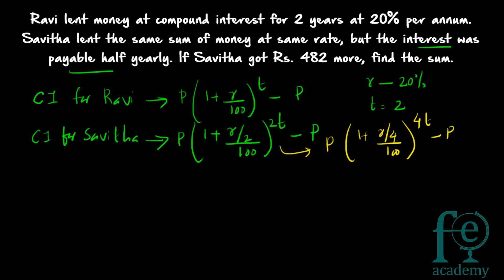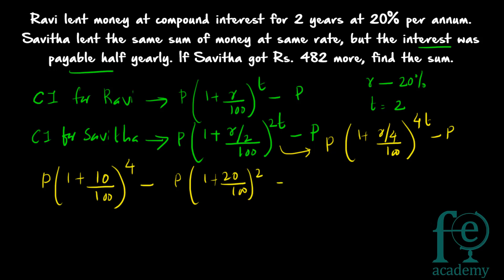Now you have to find the difference between the two compound interests, and that difference is equal to 482. So write down the formula. It will be: P × (1 + (R/2)/100)^(2×2) − P × (1 + 20/100)^2 = 482. Since R = 20, R/2 = 10, so it becomes: P × (1 + 10/100)^4 − P × (1 + 20/100)^2 = 482. When taking the difference, the two P terms cancel out.